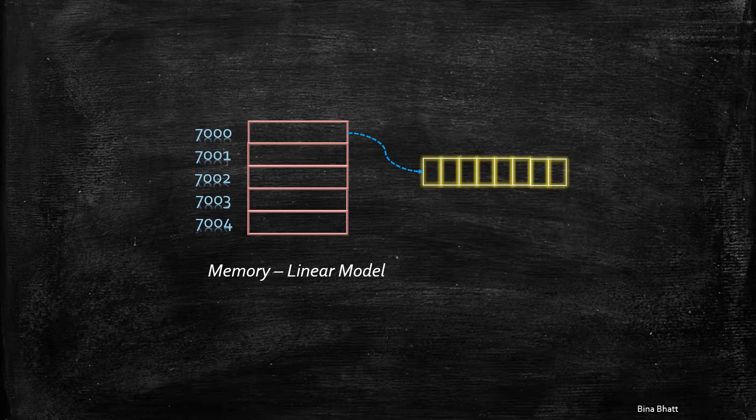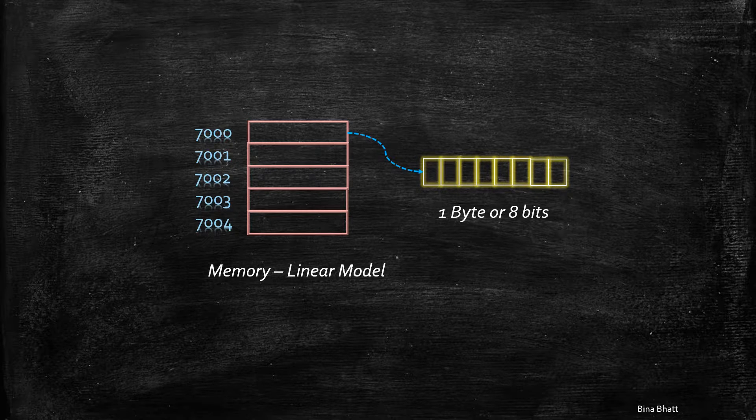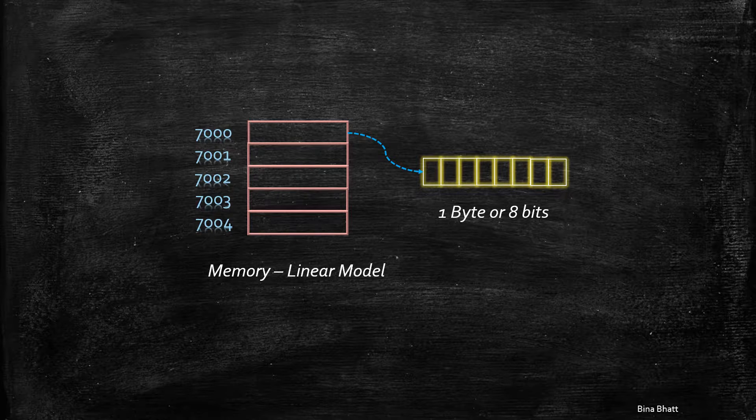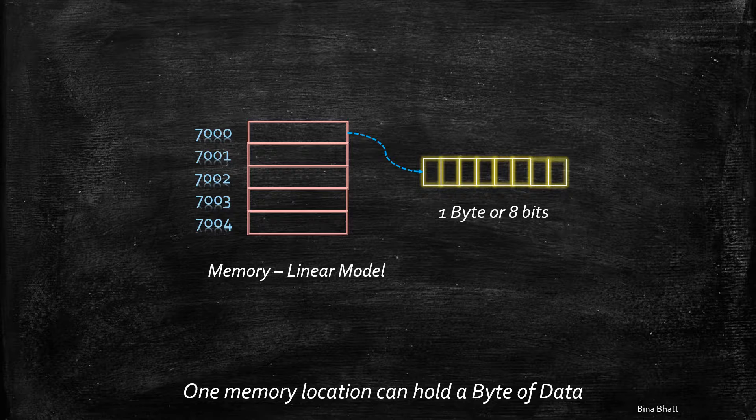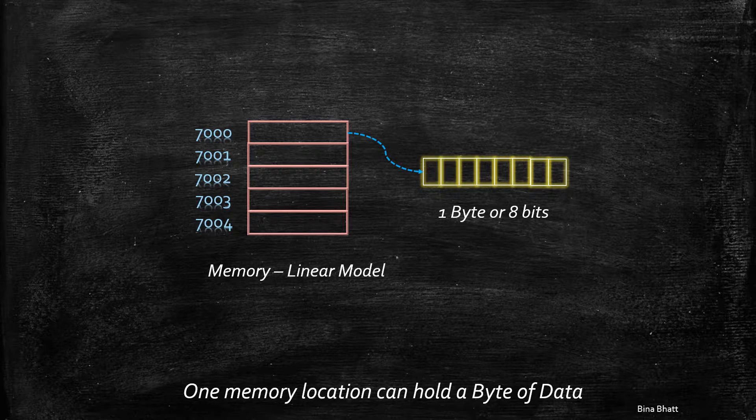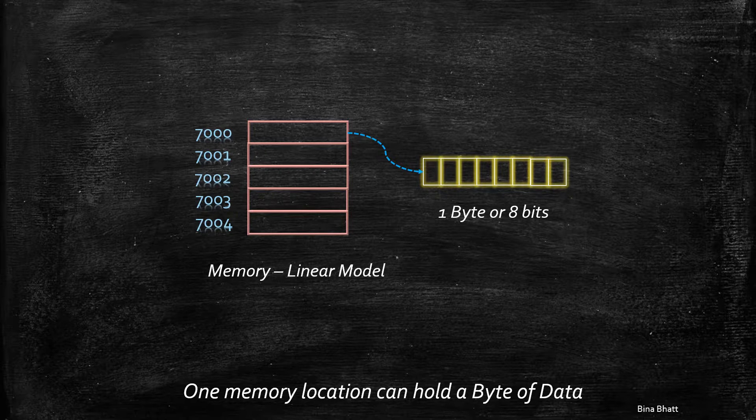Now, each location in the memory can hold 8 bits or 1 byte of data. So if your data is of 1 byte only, then it can be stored in any location and retrieved easily for future access. There is no confusion about this.